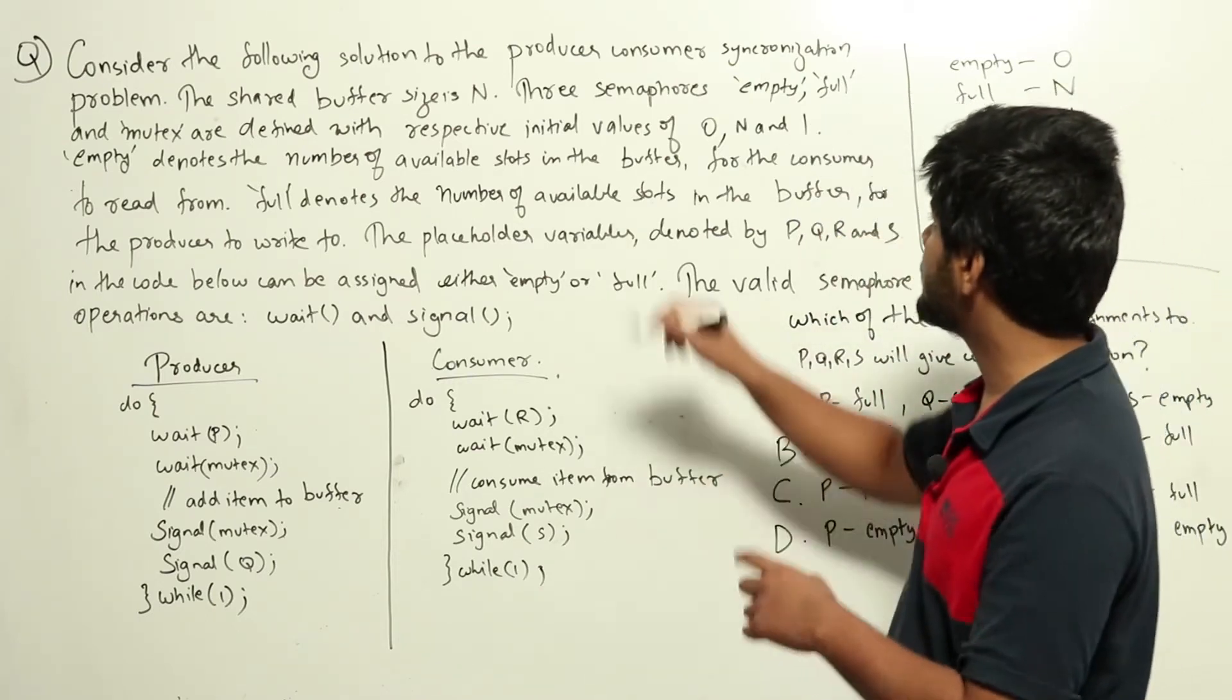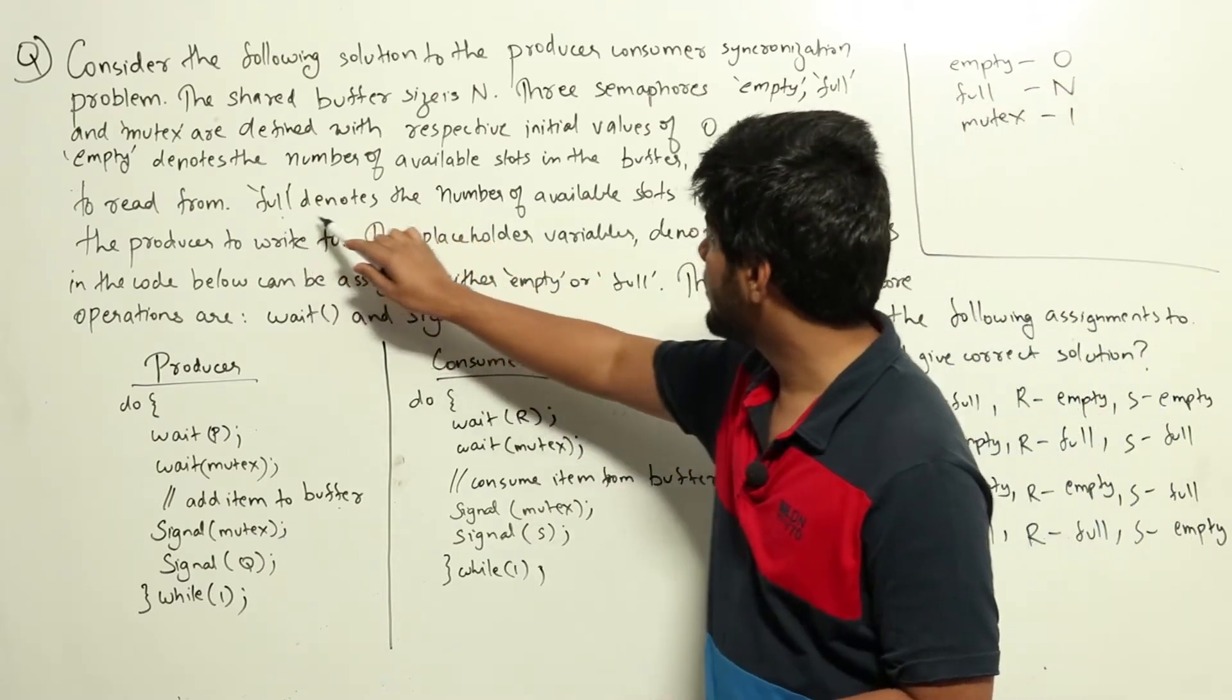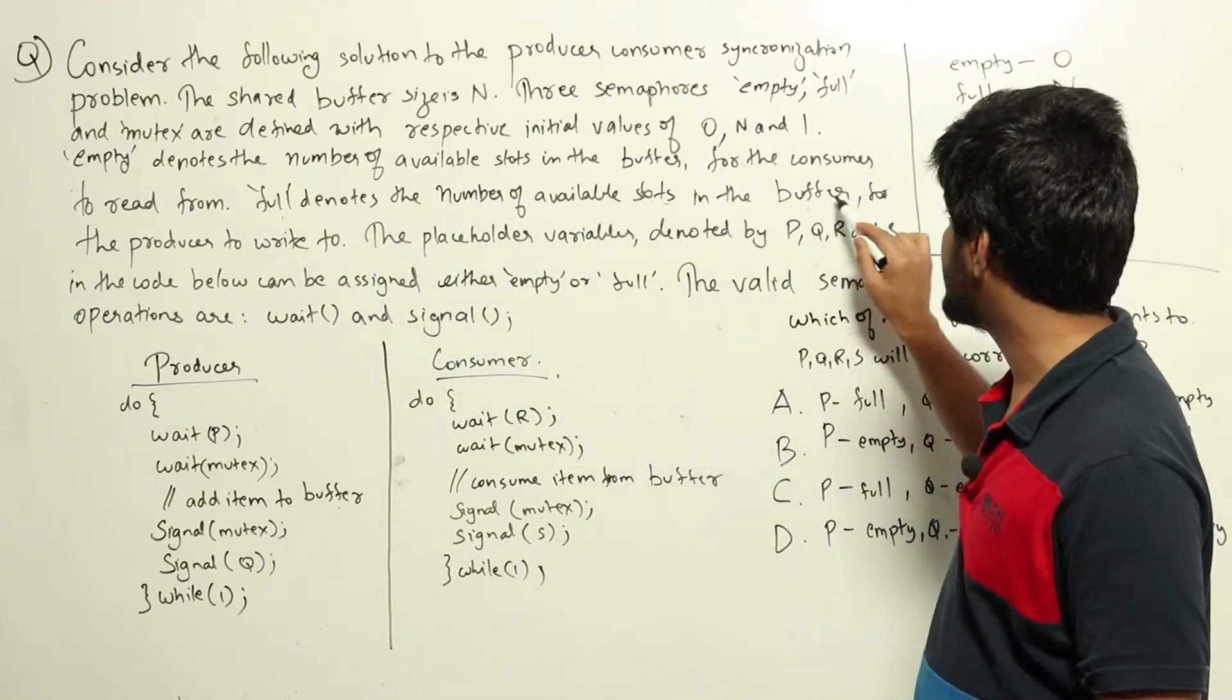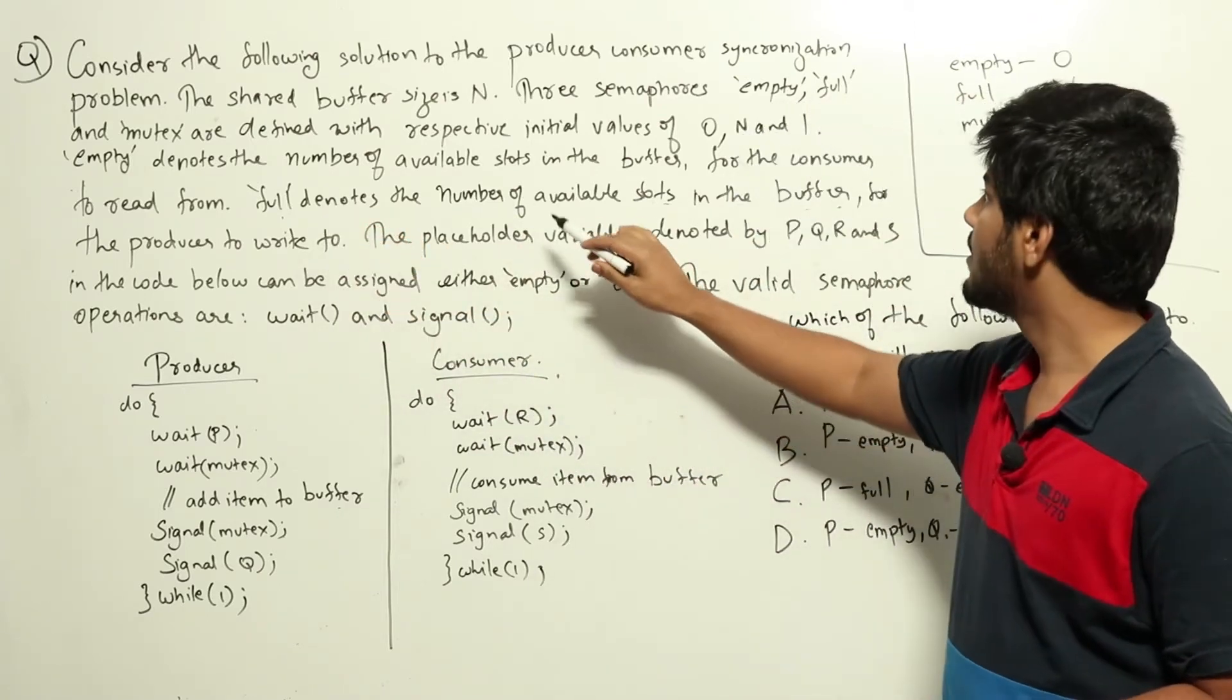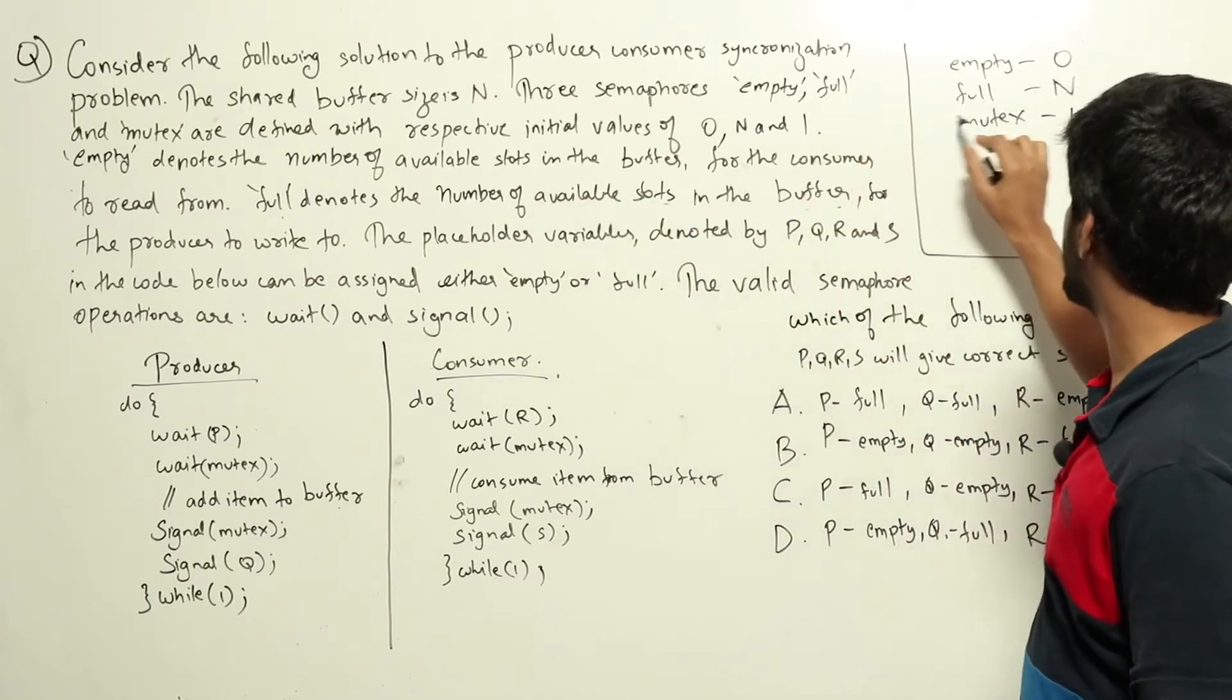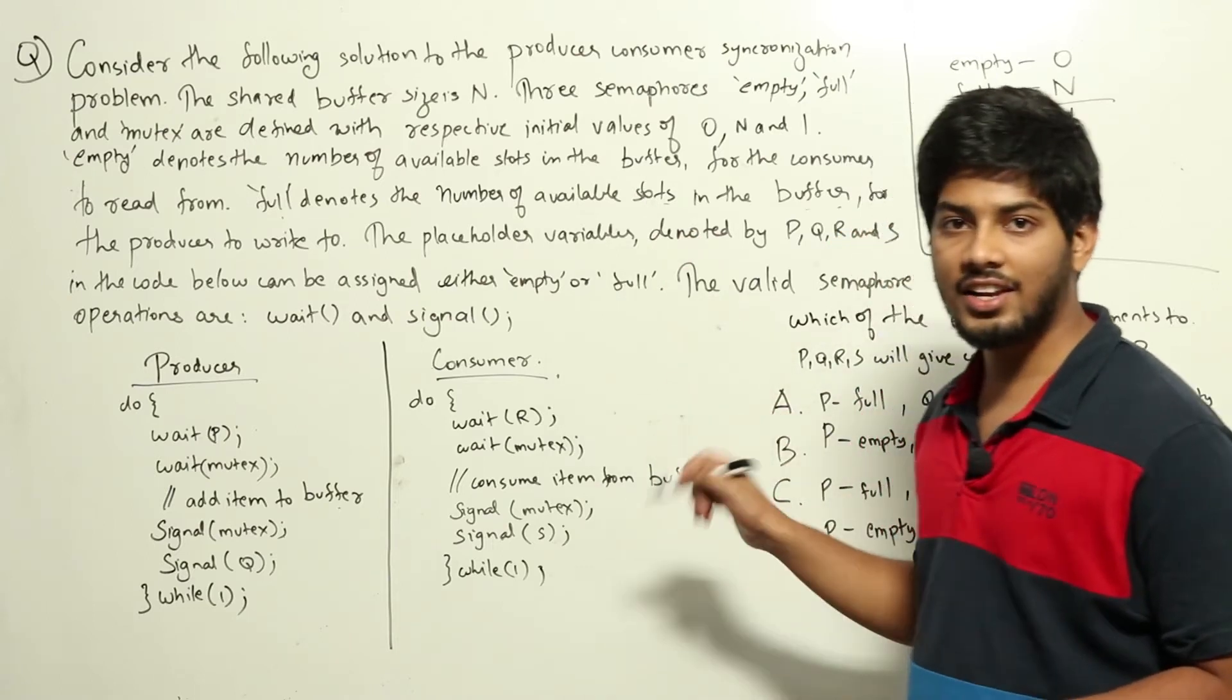Let's take a look at these semaphores and see what they mean. It is saying that full denotes the number of available slots in the buffer. Initially full is assigned to n, meaning initially there are n slots available in the buffer.